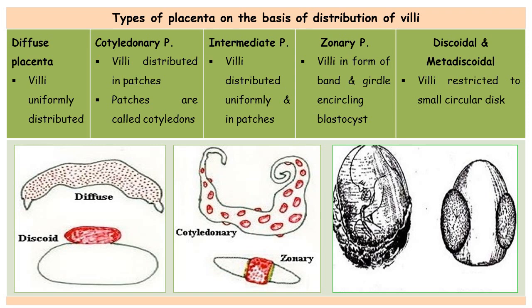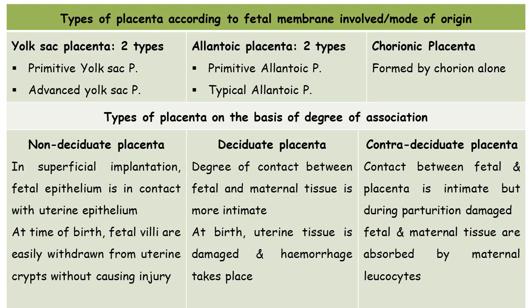This covers the types of placenta on the basis of distribution of villi on the surface of the blastocyst. The next category is type of placenta on the basis of the fetal membrane involved — which fetal membranes contribute to the formation of placenta, also called classification on the basis of mode of origin. There are three types: yolk-sac placenta, allantoic placenta, and chorionic placenta.